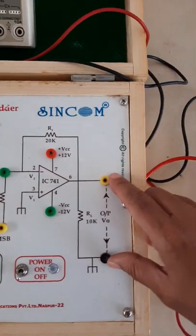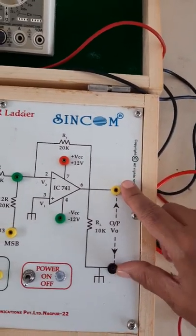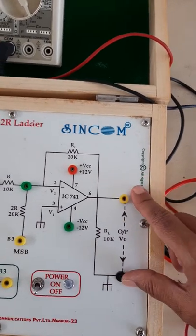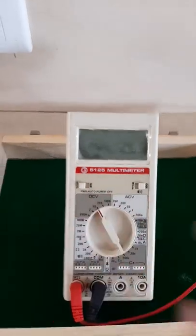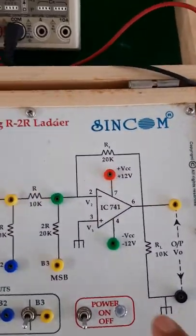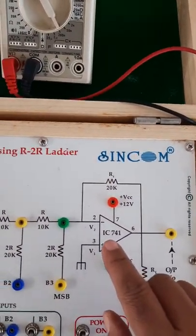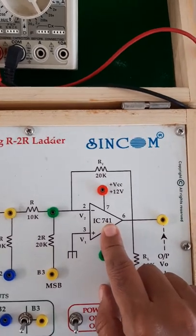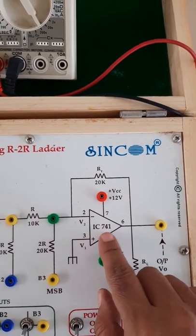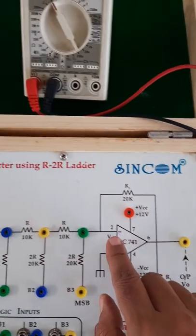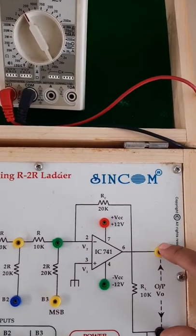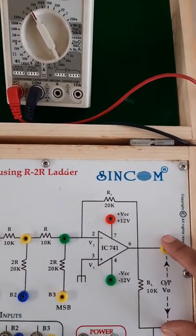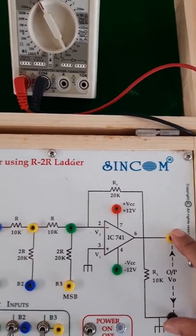The output will be measured here and this output is in analog form. To measure the output we are using the multimeter in voltmeter mode. Also in this circuit the op-amp IC is used, that is IC741. This IC is used in inverting mode, so we will get the output in negative reading. The voltage reading is in negative form.